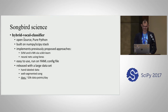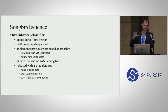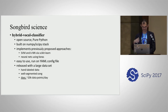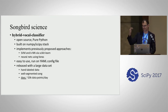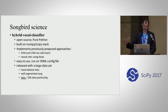Hybrid vocal classifier tries to address these issues. It's pure Python — a thin veneer of code surrounding the NumPy/SciPy stack. It implements support vector machines and k-nearest neighbors via scikit-learn and neural nets using Keras. It's hopefully easy to run, just consuming configuration files written in human-readable YAML. Along with it, we've released a large dataset of hand-labeled data with days full of data points that you can benchmark to your heart's content.